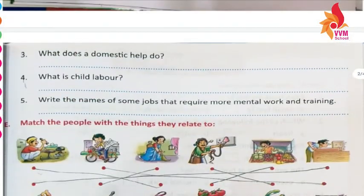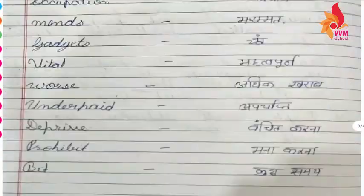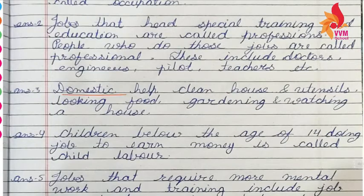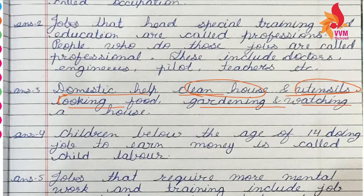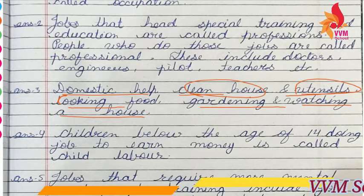Next: what does a domestic help do? Jo domestic help hai wo kya karta hai? Domestic help cleans house and utensils — house ko clean karne ka work hota hai, and utensils. Cooking food — food banane ka work hota hai. Gardening — garden mein plants ki care karna. Watching a house — house ko watch karna. Yeh sab aapke domestic help ke kaam hain.